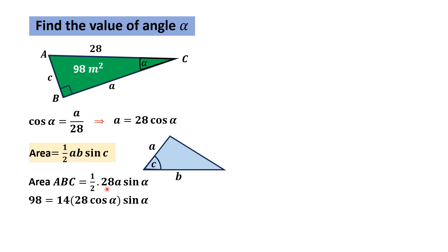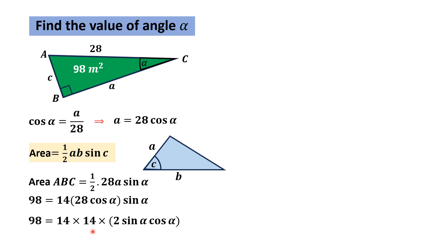The 2 cancels with 28 to become 14. Now separating 2 from 98, we get 98 equals 14 times 14 times 2, giving 196. Dividing 196 on the left side, we get one-half. So 2 sine(alpha) cos(alpha) equals one-half after this simplification.